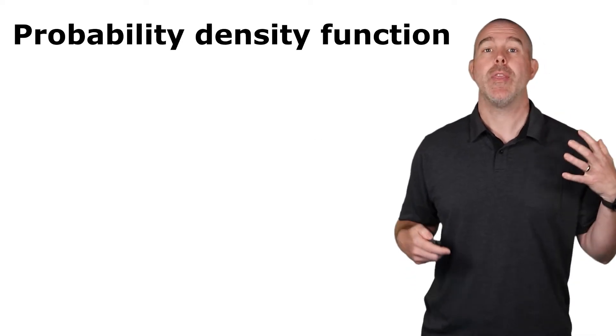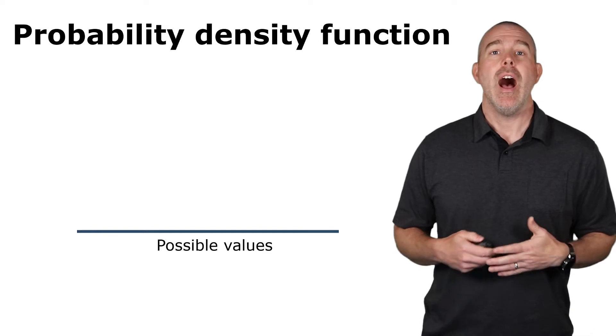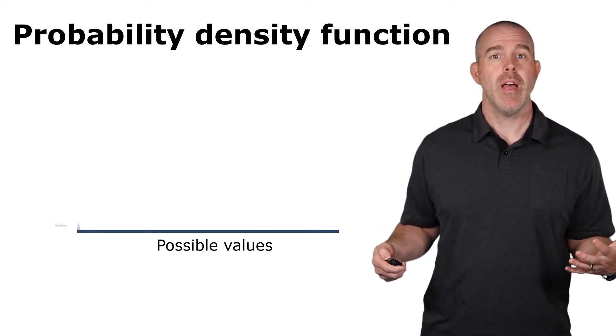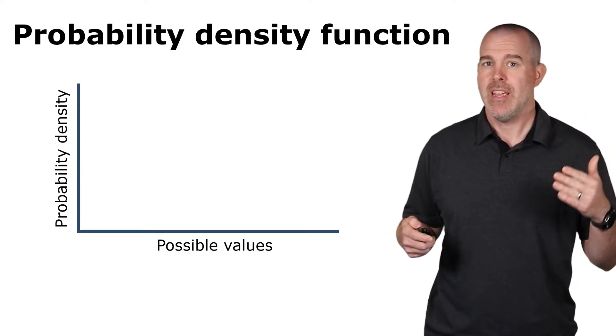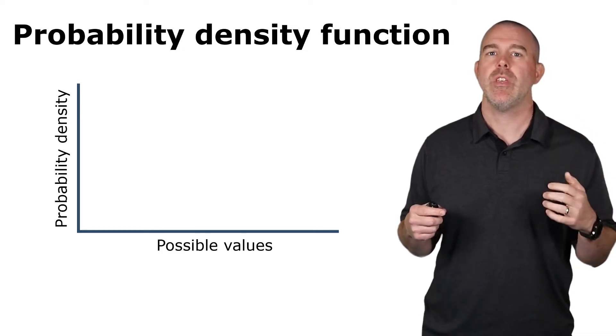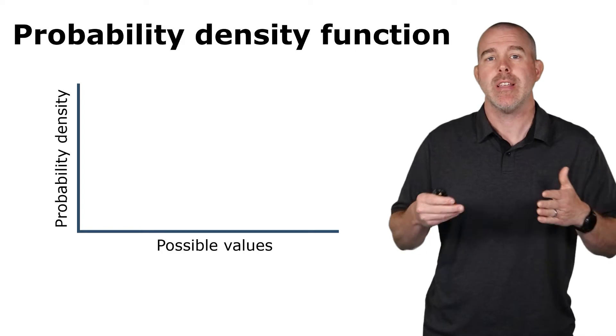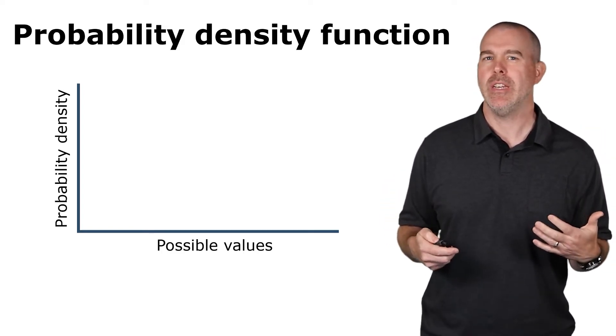What we're talking about is the probability density function. So along the x value on these will be all the possible values of your variable, and then the vertical axis is the probability density. Not saying the actual probability because individual values here for continuous variables like we're talking about don't have probabilities, but there's an interval. So it's saying how dense is the probability near that.